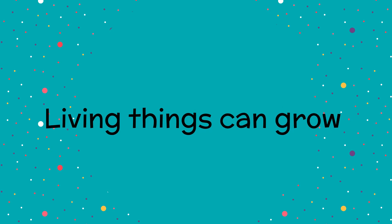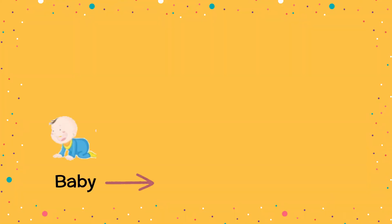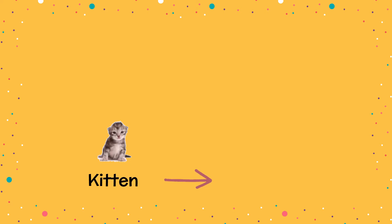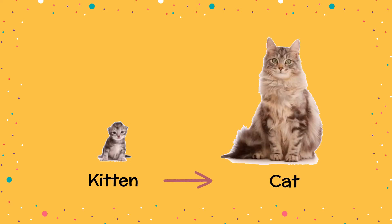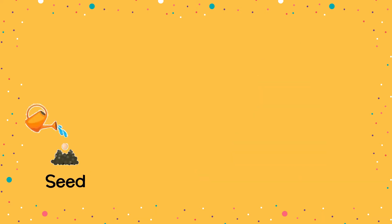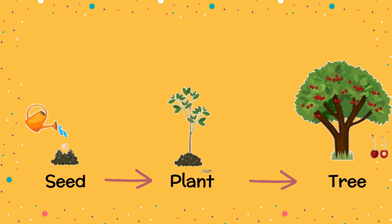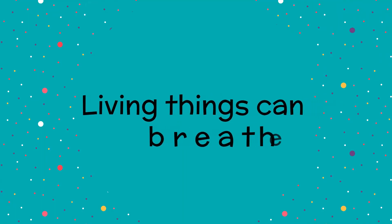Living things can grow. A baby grows into a child. A child grows into a man. A kitten grows into a cat. A seed grows into a plant. A plant then grows into a huge tree.